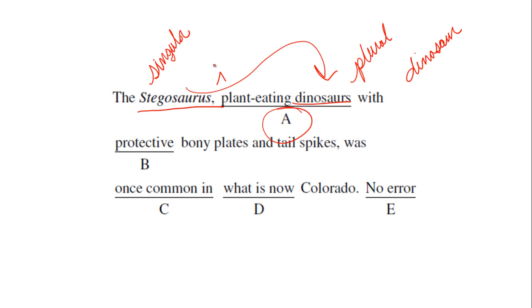We also need to insert the article 'a' before 'plant-eating.' Let's reread: 'The stegosaurus, a plant-eating dinosaur with protective bony plates and tail spikes, was once common in what is now Colorado.' That's it for common writing error number five — noun agreement. I hope you found this video tutorial informative. Please check out our other ones, and have a great day!